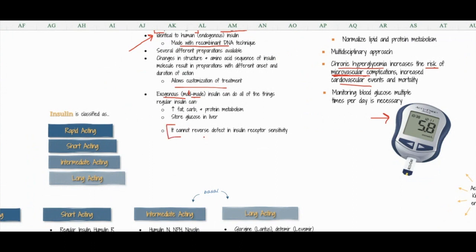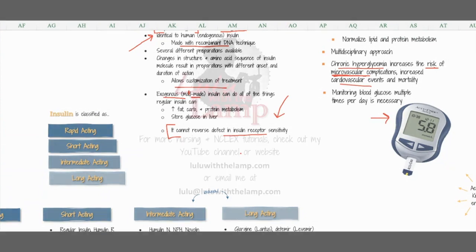They can't reverse any defects in insulin receptor sensitivity, meaning in diabetes type 2, which is usually caused by your body cells not being able to use insulin due to decreased insulin sensitivity. It's not going to change that—that's a permanent problem. What it can do is increase your insulin so that those cells that are working are able to take up more glucose.